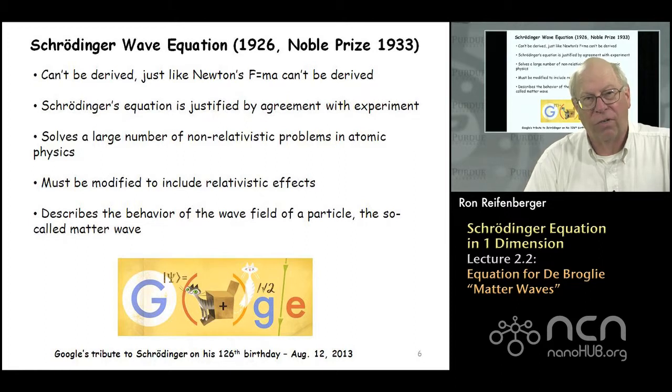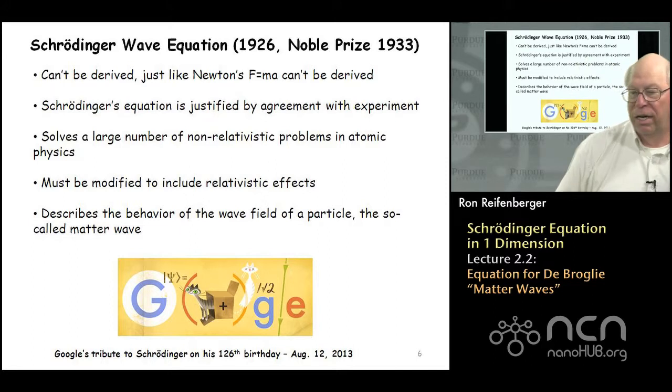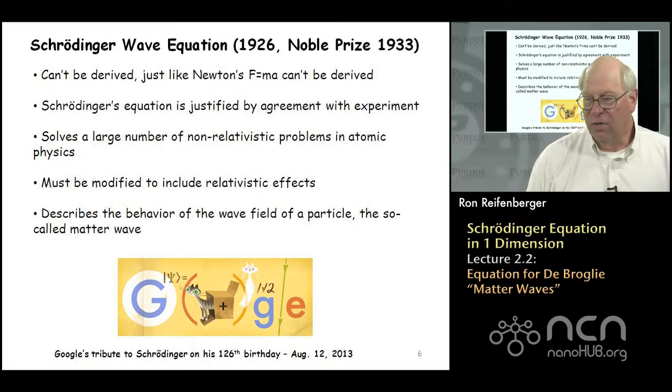Schrodinger's equation is ultimately justified by its excellent agreement with the experimental data. This equation solves a large number of problems in quantum physics, in atomic physics, as long as the energy of the electrons or the energy of the particles is non-relativistic. So if the speed of the objects that we're trying to study starts to approach the speed of light, then you have to fix up Schrodinger's equation and include relativistic effects. We'll do a little bit of that at the end of the semester, but not a whole lot.